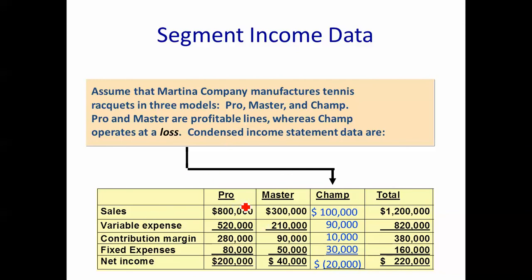Looking at the income statement broken out by Pro, Master, and Champ: sales are $800,000, $300,000, and $100,000. Variable costs are $520,000 for Pro, $210,000 for Master, $90,000 for Champ, totaling $820,000. Pro has a contribution margin of $280,000; Master, $90,000; Champ, only $10,000. Fixed costs are allocated among the three: $80,000 for Pro, $50,000 for Master, and $30,000 for Champ.